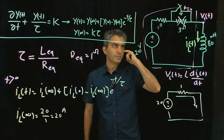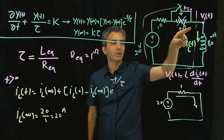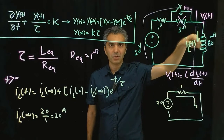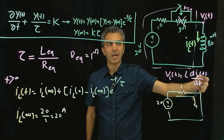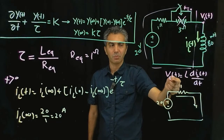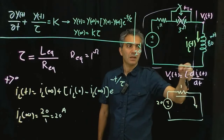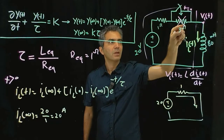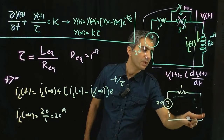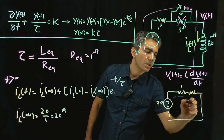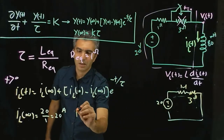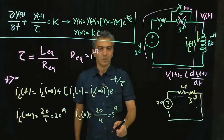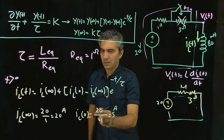For I_L(0): right before the switch, the current can't change abruptly — an abrupt change would require infinite voltage, which can't happen. So the current right before and right after the switch must be the same. Right before the switch, the circuit gives I_L(0) = 20/4 = 5 amperes.